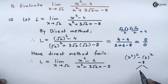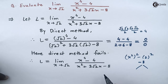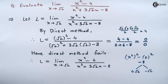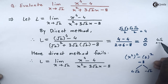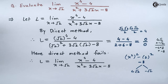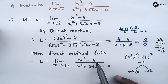For minus 8 we want two factors whose product is minus 8 and whose sum is plus 3 root 2. We take 4 root 2 and minus root 2: multiplying them gives 4 root 2 times minus root 2, which is minus 8, and adding them gives 3 root 2. So the factors of the denominator are x plus 4 root 2 and x minus root 2. Since we have factors for both numerator and denominator, we will use the method of factorization.